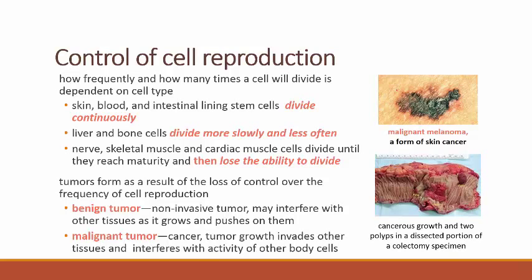And then there are some cells in the body that, once they are fully mature, will no longer be able to divide. Nerve cells, skeletal muscle cells, and cardiac muscle cells can all divide until they reach maturity, and then at that point, what you got is what you got — all you can do is lose neurons after that point.